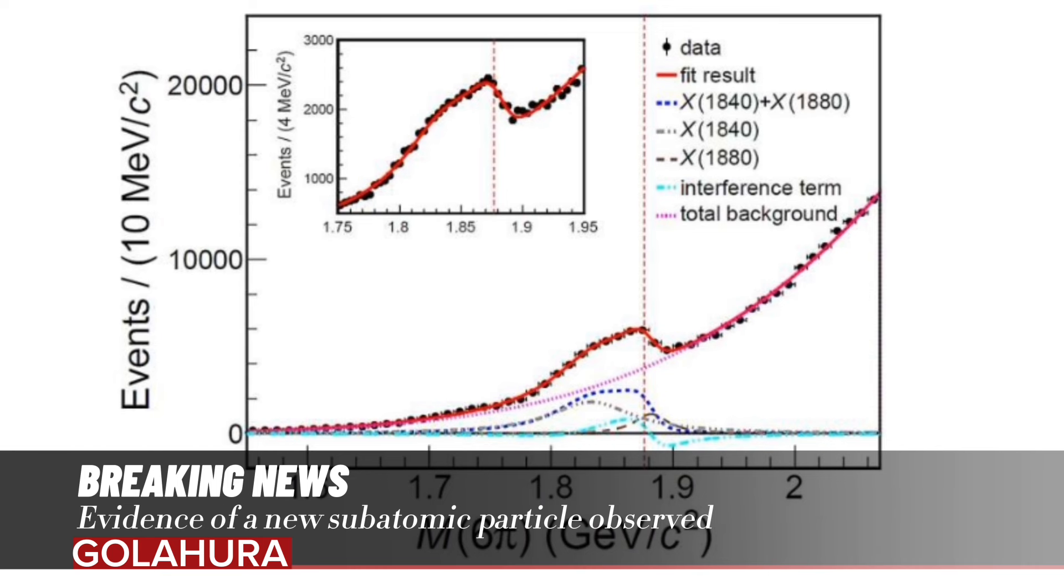This revealed a new resonance X(1880) with a statistical significance greater than 10σ. The mass and width were determined to be 1882.1±1.7±0.7 MeV/c² and 30.7±5.5±2.4 MeV/c, respectively. The proximity of its mass to the p-pbar mass threshold supported the existence of a p-pbar bound state.